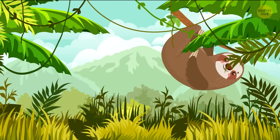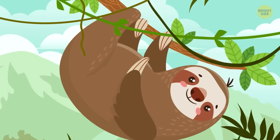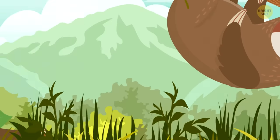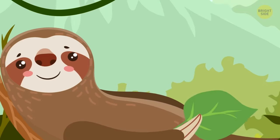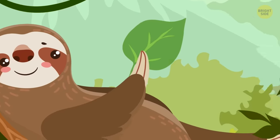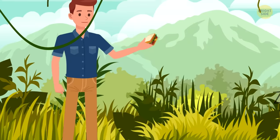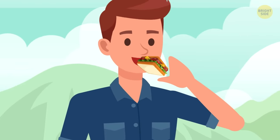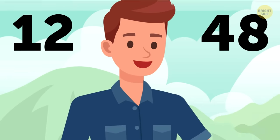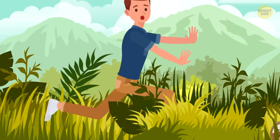Sloths are the slowest animals in the world, and I'm not only talking about how they move. It takes these sleepy mammals up to a month to digest a single leaf. Most of them also go to the bathroom just once a week. For comparison, depending on the kind of food, people need just 12 to 48 hours to eat a meal, digest it, and get rid of the waste.